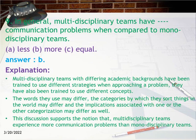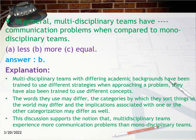Question 9: In general, multi-disciplinary teams have more or less communication problems compared to mono-disciplinary teams? a) less, b) more, c) equal. Answer: b. Explanation: Multi-disciplinary teams with differing academic backgrounds use different strategies, concepts, and words when approaching a problem. The categories by which they sort things and the implications of those categorizations may also differ, supporting the notion that multi-disciplinary teams experience more communication problems than mono-disciplinary teams.